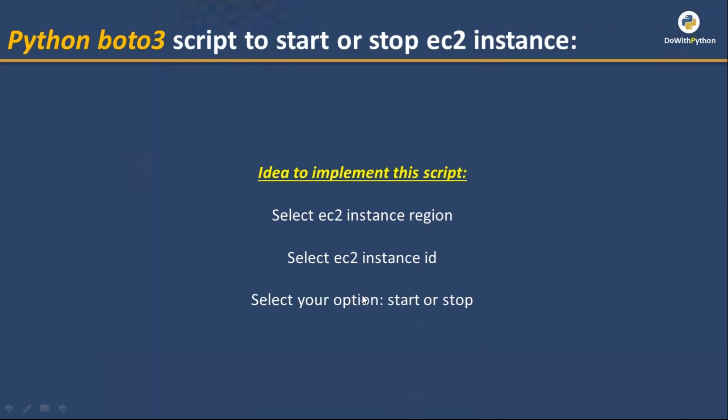After that, you need to select your option — whether to start or stop. You may not be sure if the EC2 instance is already running or stopped. If it is already running and you give the start option, the script itself needs to handle that: if the instance is already running, don't try to start it again — just provide a message that it is already running.